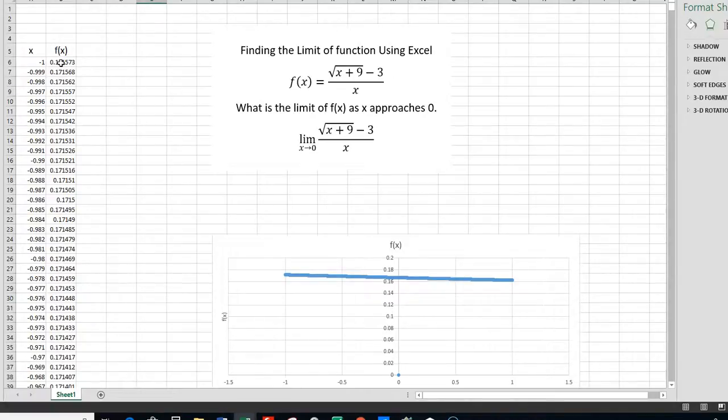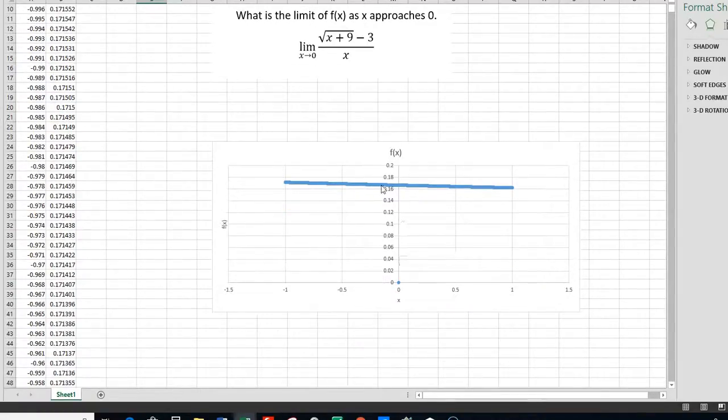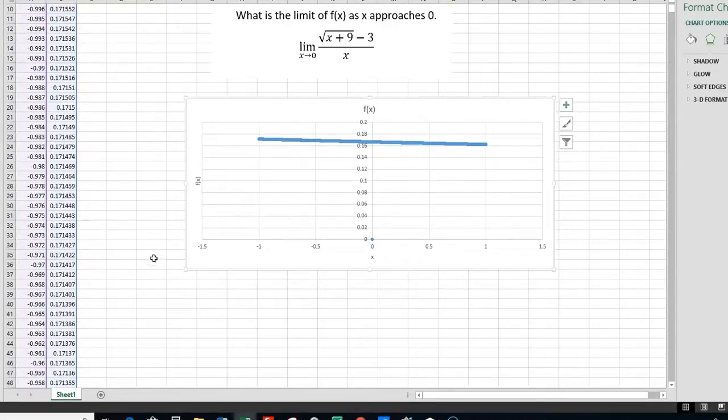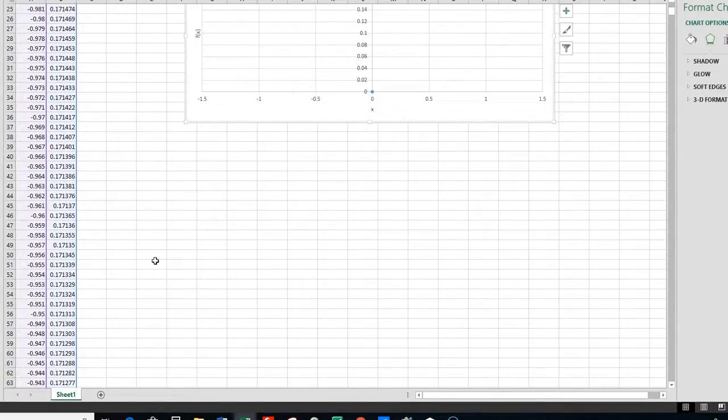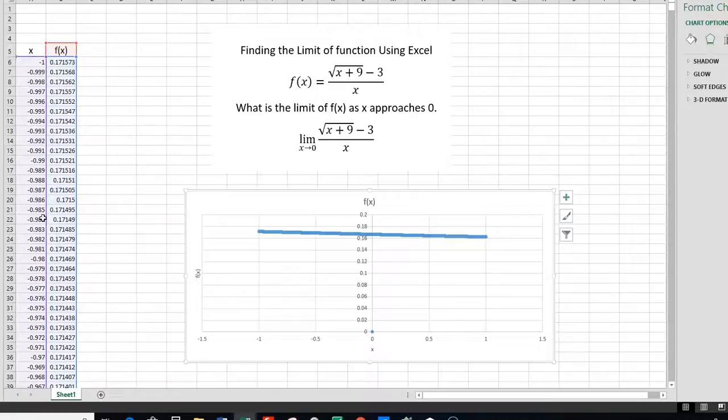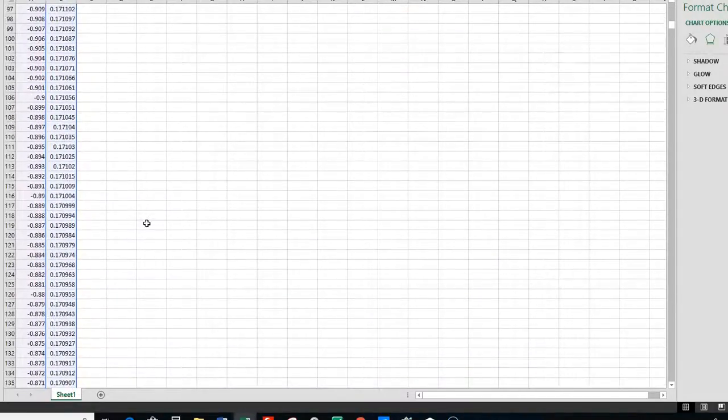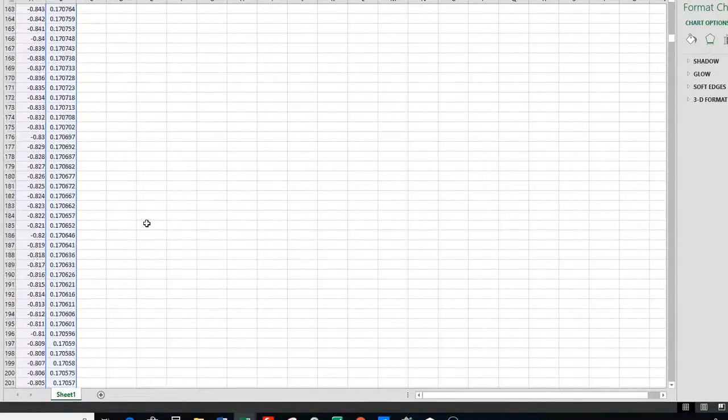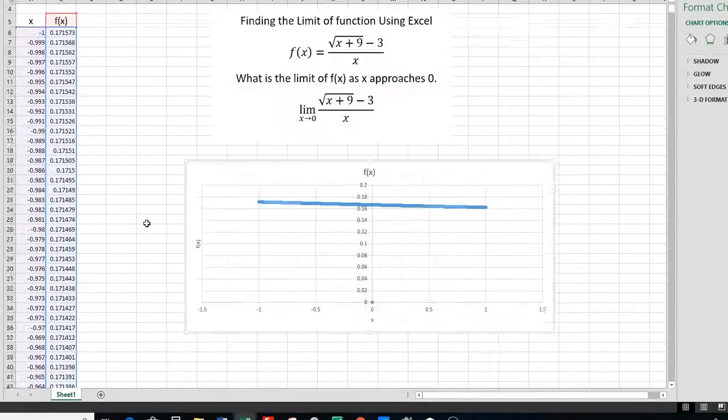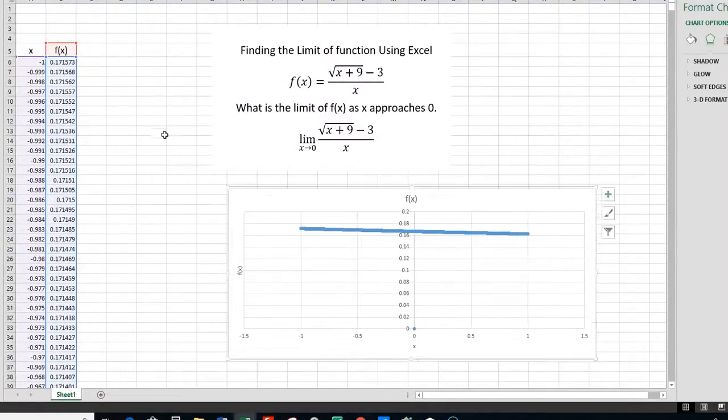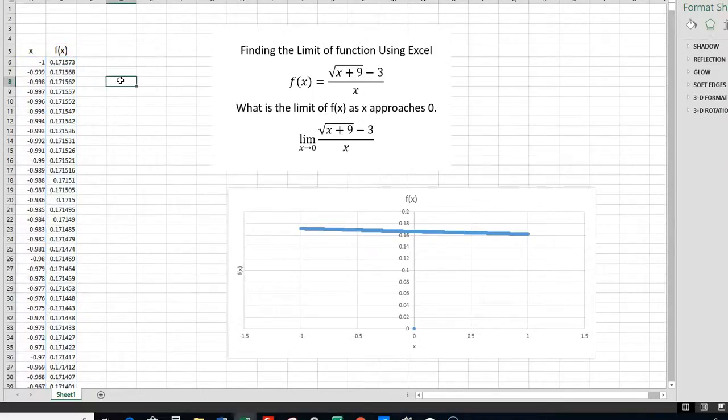You could put a different function in, but you can see that as I approach zero from either side, I get about 0.166. There it is right there. So, that's an easy way to find the limit. You put an array of x values with very small increments so that you're approaching getting very close. There are little tricks you can do. Let me show you another way to do this.